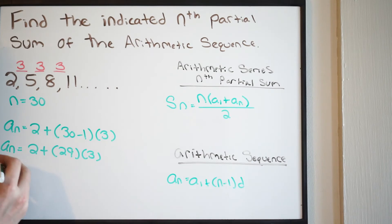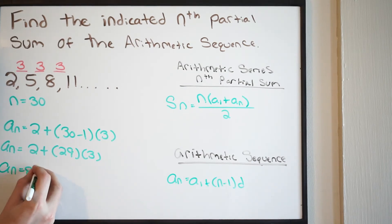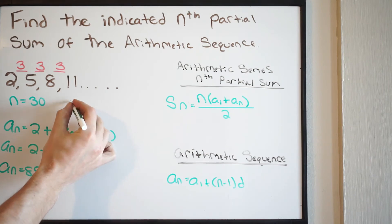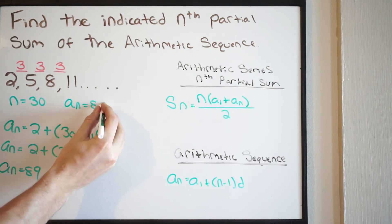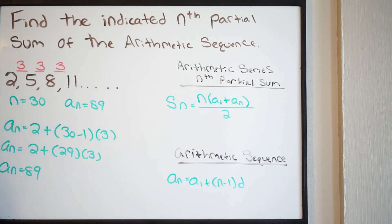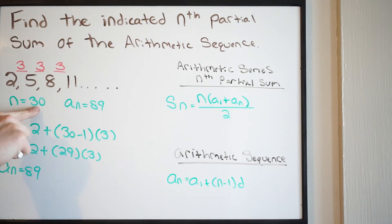Plugging that into our calculator, we get 89. So the value of the 30th term in this sequence is 89. Let's record that: A(N) = 89. Now we have all the information we need to calculate the partial sum of this arithmetic sequence — the sum of all the terms going up to the 30th term.